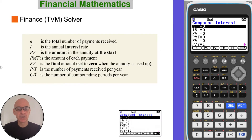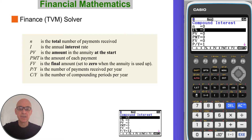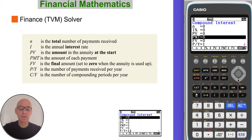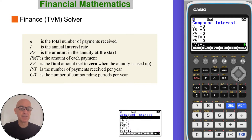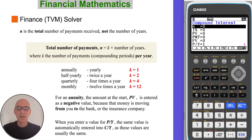When using the finance solver for annuities: N is the total number of payments received; I is the annual interest rate; PV is the amount in the annuity at the start; PMT is the amount of each payment received; FV is the final amount, set to zero when the annuity is used up; P/Y is the number of payments received per year; and C/Y is the number of compounding periods of interest per year. N is the total number of payments received, which is also the total number of compounding periods — it is not the number of years.